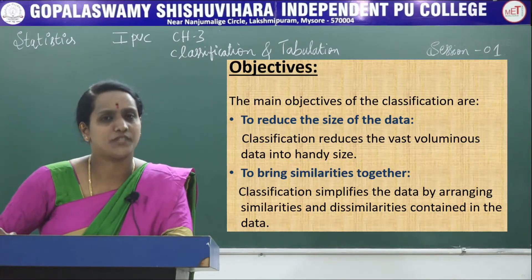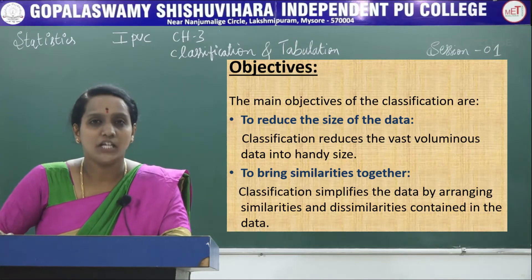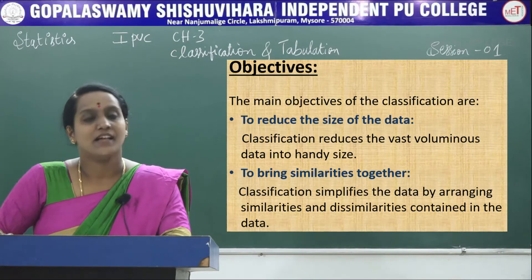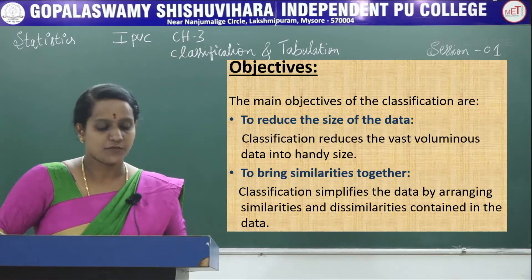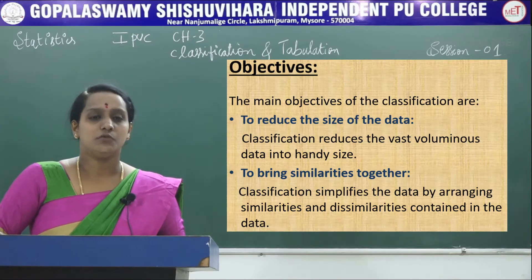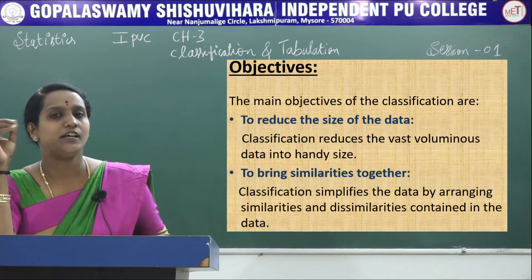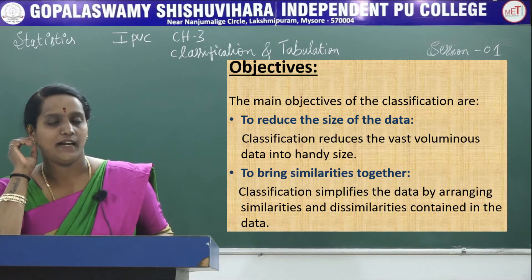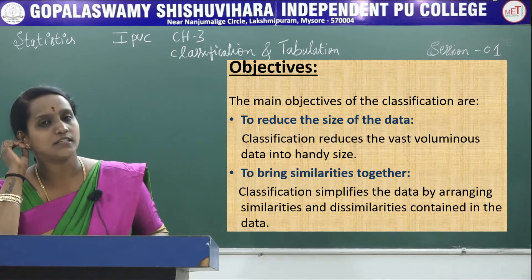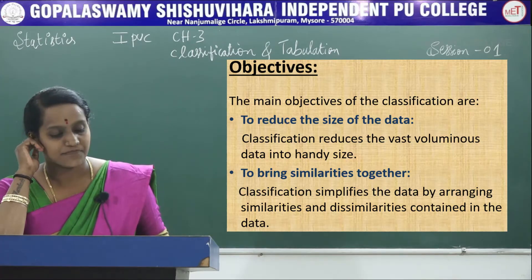Let's see some objectives. The main objective of classification is to reduce the size of the data. Classification reduces vast and voluminous data into a handy size. While we are doing a survey, we collect all the information, and based on that information we have to give an interpretation — so first we reduce the size of the data.